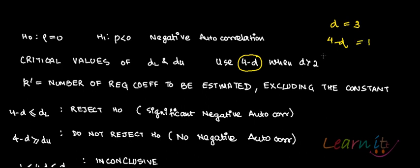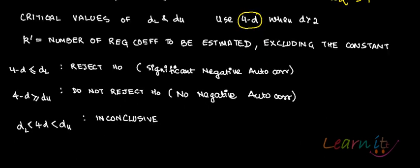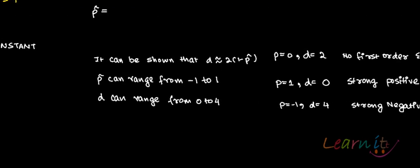For the negative autocorrelation test: if 4 - D < D_L, you reject the null hypothesis — there is significant negative autocorrelation. If 4 - D ≥ D_U, you do not reject the null hypothesis — there is no negative autocorrelation. Again the same problem arises: if 4 - D lies between D_L and D_U, the test becomes inconclusive.